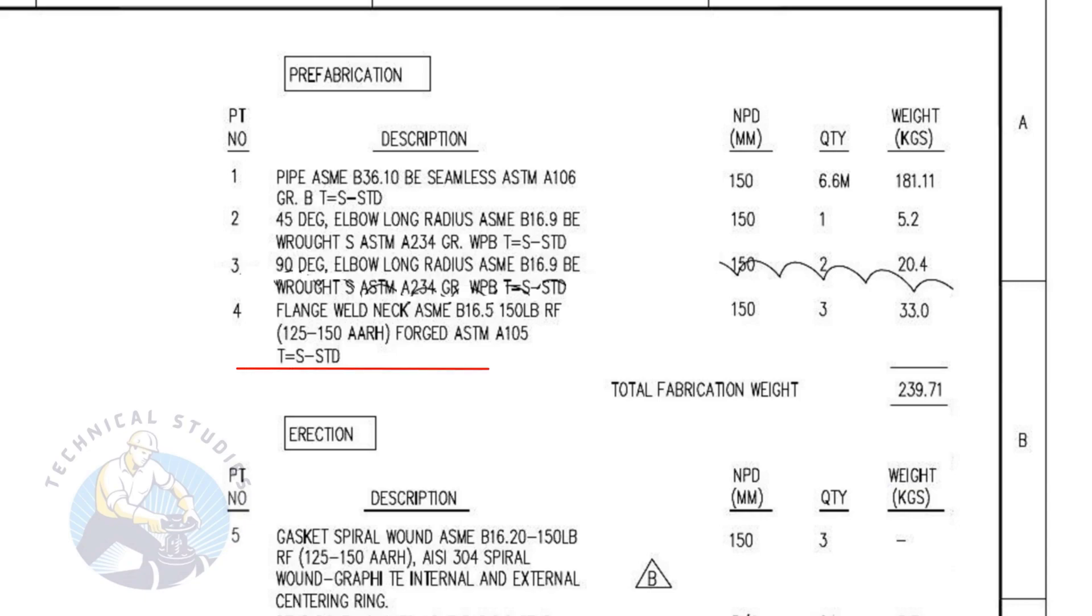Item number four is a forged raised face weld neck flange. The rating is 150 pound and the nominal pipe diameter is 150. The quantity is three numbers.